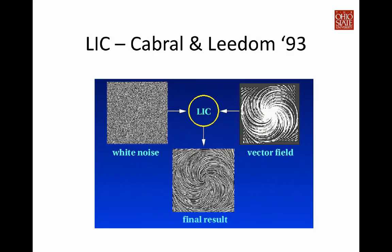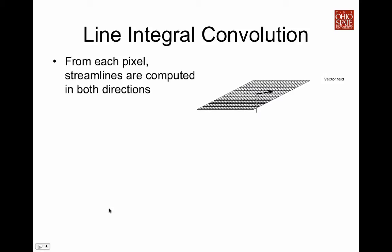So let's look at the line integral convolution algorithm in detail. It was originally proposed by Cabral and Leedom in SIGGRAPH 1993. The line integral convolution algorithm takes a white noise image and also a two-dimensional vector field as input. Then for every output pixel, we are going to perform convolution. Basically, it's the weighted average of the white noise to generate the output pixel value.